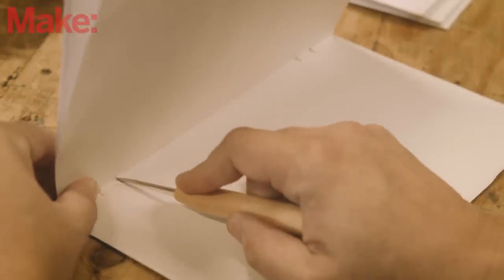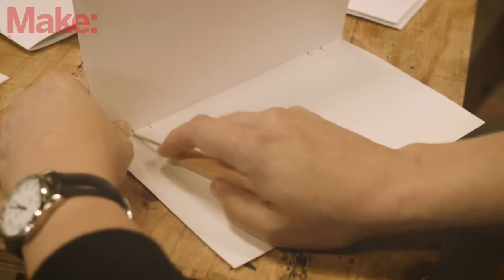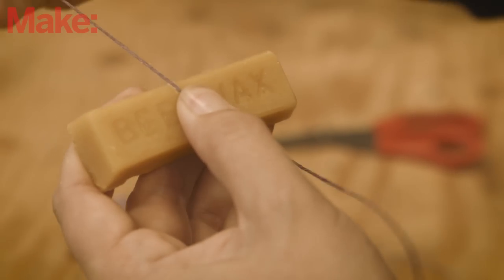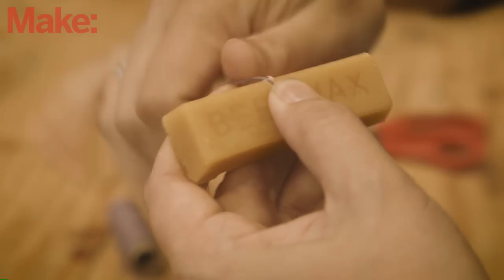Once you're finished, gather all the signatures and guide paper aligning them with the marks we made earlier. Cut two sets of strings and coat with beeswax. This helps the strings grip to itself.